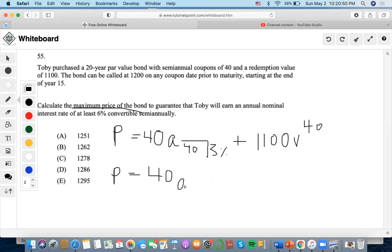So this time it's 15 times 2 semi, so it's 30, 3% plus called at $1,200.